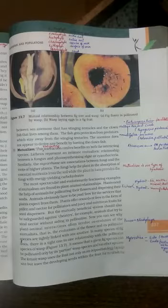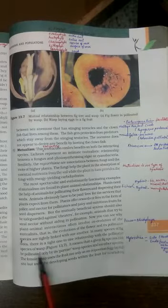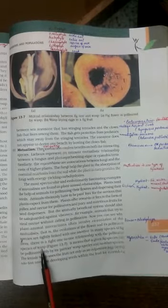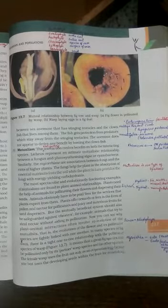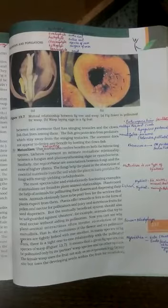There are wasps which are very important for fig to perform pollination. It means that a given fig species can be pollinated only by its partner wasp species and not by other species of wasps.